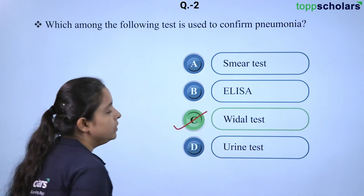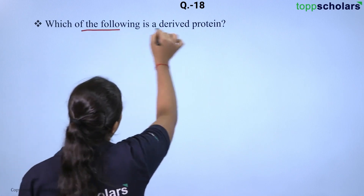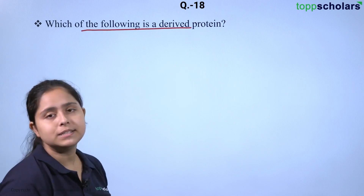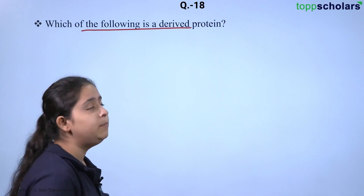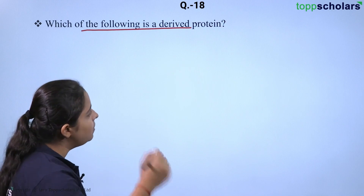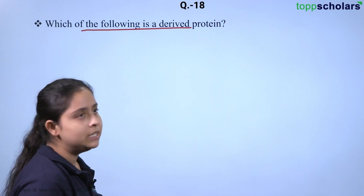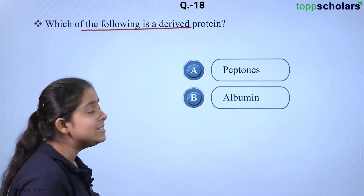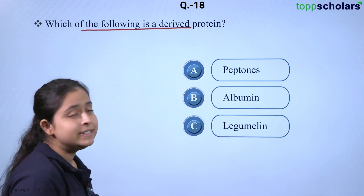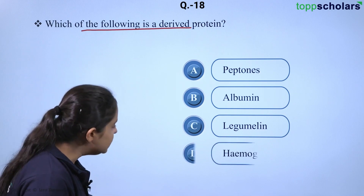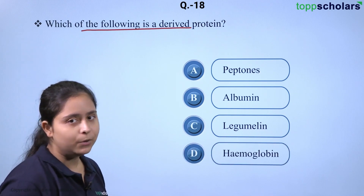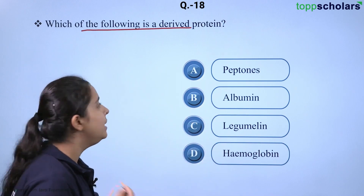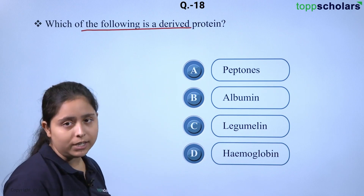Thus, the correct answer for this question is option C. Next question: which of the following is a derived protein? To answer this question, you must know what we mean by derived protein. The options are: option A is peptones, option B is albumin, option C is legumelin, and the last option D is hemoglobin. You need to find out which of these proteins is actually a derived protein.